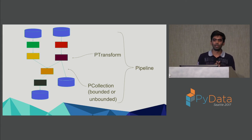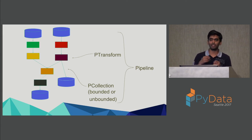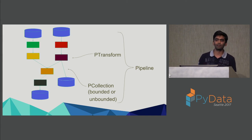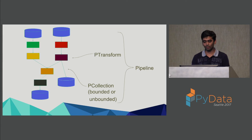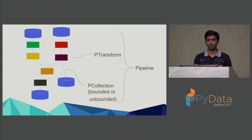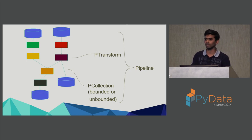A single transformation is called a P-transform — a parallelizable transform that can be applied to different parts of the stream on different workers. The data that travels between transforms is a P-collection — a set of elements that might be infinite in size. A bounded P-collection is where your data is static and you know when it ends, while an unbounded P-collection, like reading from a Twitter stream, has no known end point.